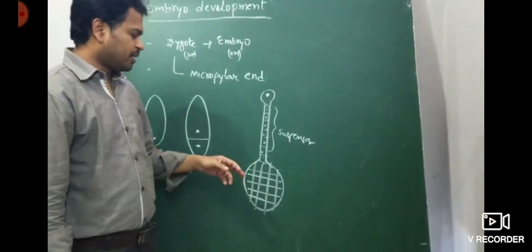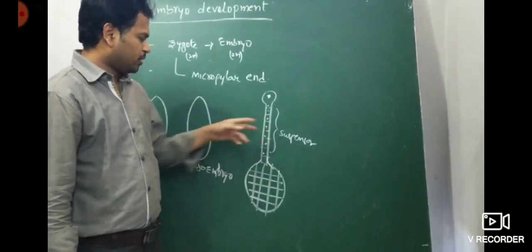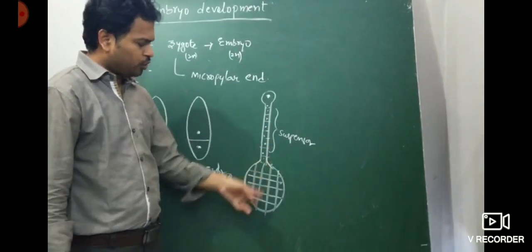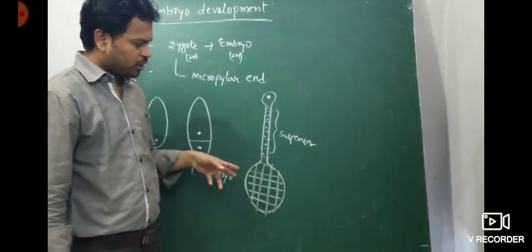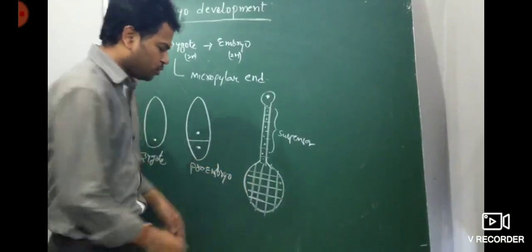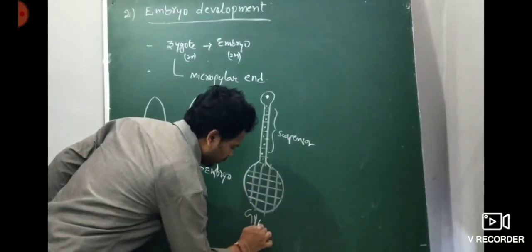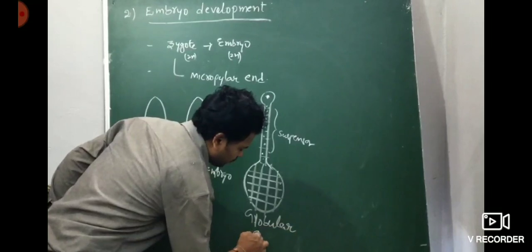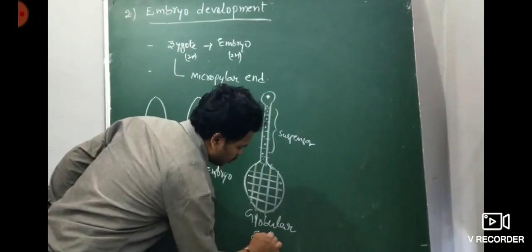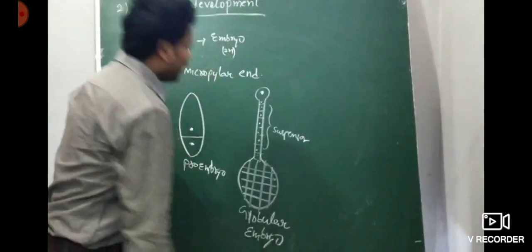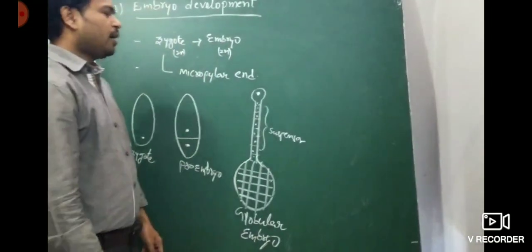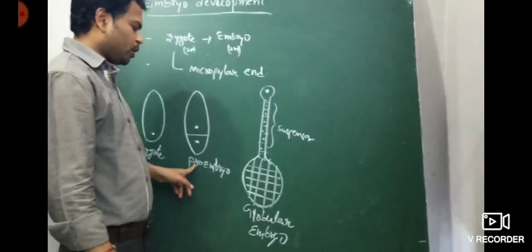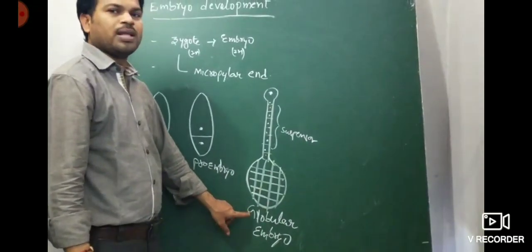The terminal cell first shows longitudinal division, then transverse division, and produces the globular embryo. So the sequence is: zygote → pro-embryo → globular embryo. The suspensor (6–8 cells) is produced by the basal cell through transverse division.